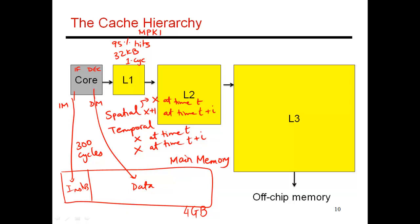So next, if I'm lucky and I get data in one cycle, the pipeline moves on without any stalls. If I'm unlucky, then I have a miss in my L1 cache. And so then I go ahead and look up my L2 cache.